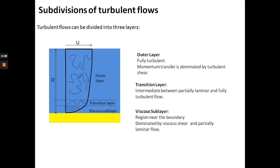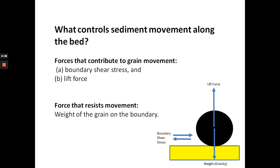Today we're going to use the concept of velocity gradients to explain today's topic. We want to answer this simple question: what controls sediment movement along the bed? You have a river flowing and sand moves — but what makes the sand move along the bed? What forces contribute to grain movement? This cartoon shows the bed at the bottom with a grain of sand, zoomed in at high magnification.